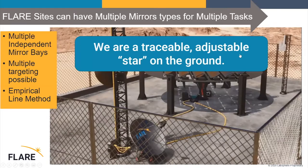Another way to think about Flare is that we are a traceable, adjustable star on the ground — a throwback to very well-established classic star radiometry done with space telescopes, which have the luxury of not having an atmosphere. We are a star on the ground with the world in the loop, able to do atmospheric extraction using the same methodologies applied for star radiance calibrations and image quality verification.